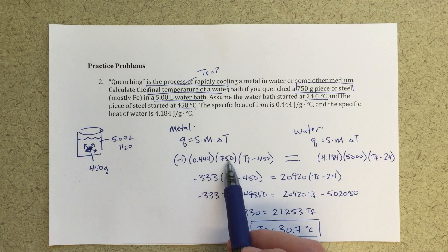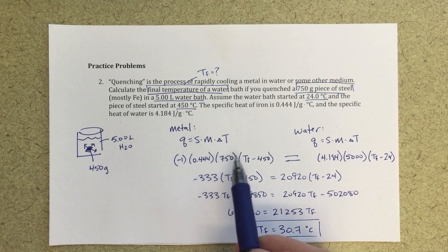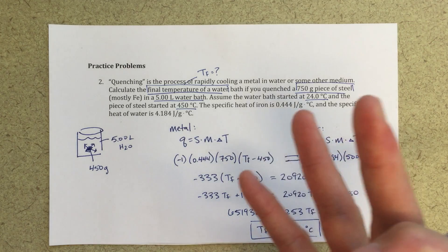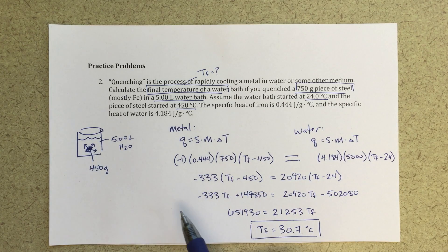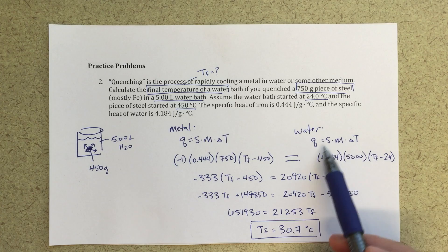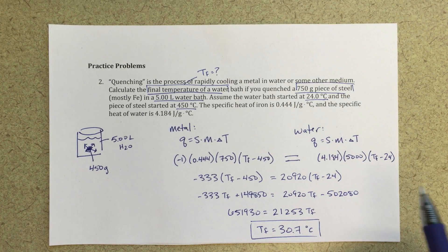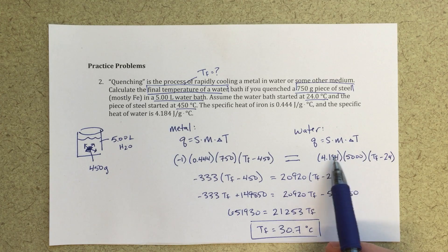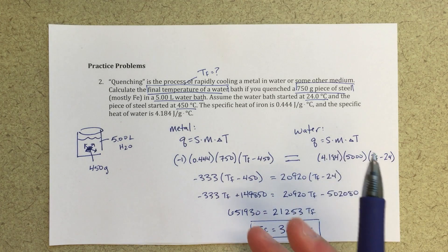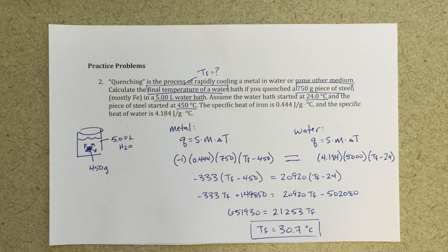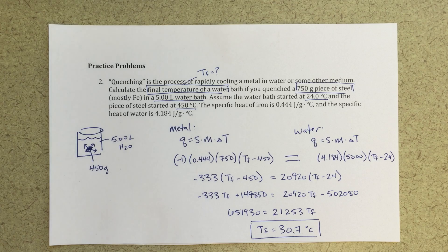So this calculation here tells us what amount of energy is going to be leaving the metal when I dunk it in that water. And this equation over here, this calculation over here is going to tell us how much energy the water is absorbing, right? And so this is going to be a positive value. Since energy transfer, all of this energy transferred from the metal is absorbed by the water, so we can set these equal to one another and solve for our t final. All right.